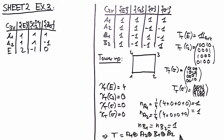Therefore you can deduce that your tower representation contains each irreducible representation once. You can check the dimensionality: the sum of the dimensions of the irreducible representations it contains is 4, exactly as expected because our tower representation is four-dimensional.